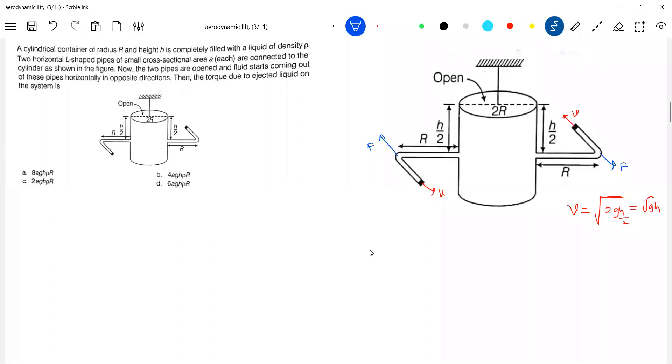Thrust force, it is called. What is the area of cross section? The smallest area a. And we know thrust force is rho v, rho a v square.